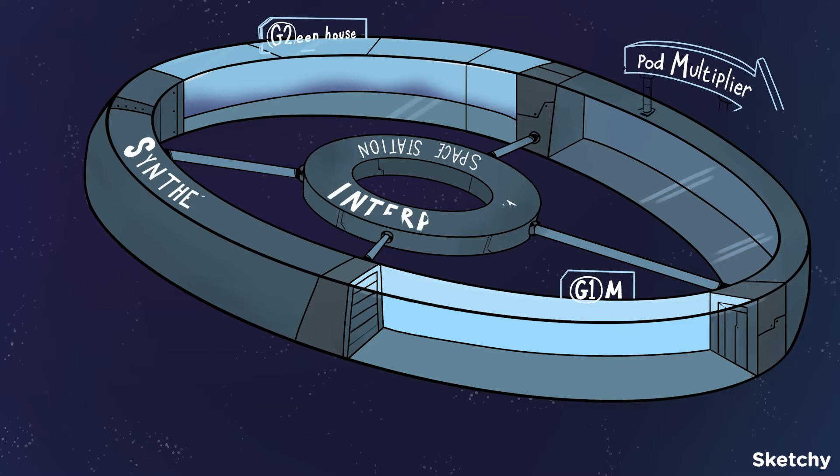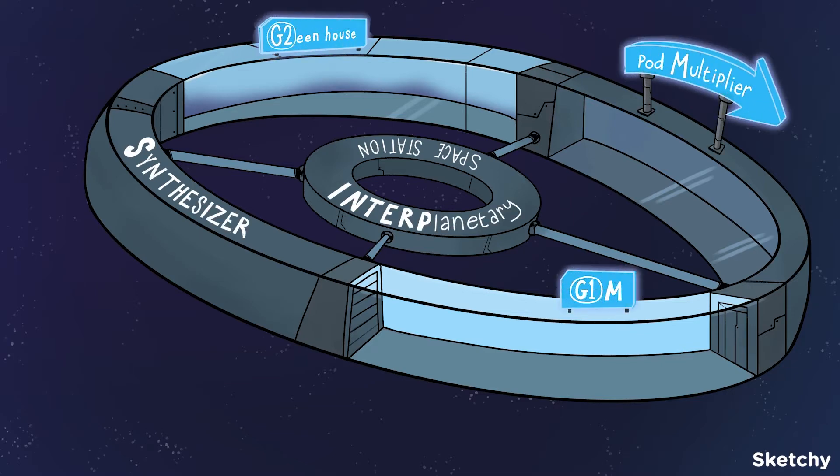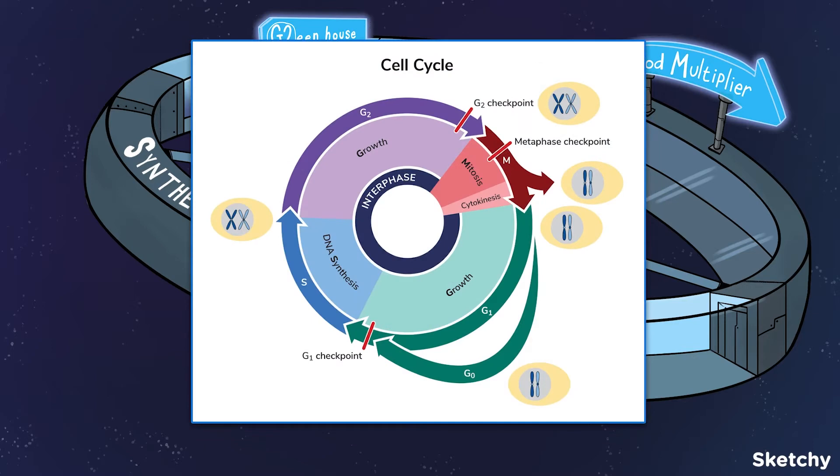The cell cycle is a series of events where a eukaryotic cell grows, replicates its genome, and then undergoes division. The cell cycle has two main parts: interphase and the mitotic, or M-phase. A cell spends most of its life in interphase. Interphase is further divided into G1, S, and G2.